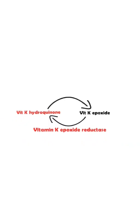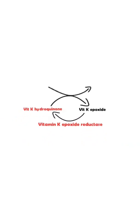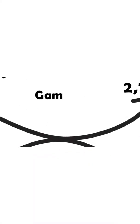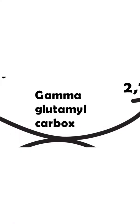Vitamin K hydroquinone is in turn helpful in the conversion of inactivated forms of the vitamin K dependent clotting factors, namely 2, 7, 9, and 10, to activated forms of the clotting factors 2, 7, 9, and 10. This process actually takes place with the help of an enzyme called gamma glutamyl carboxylase.